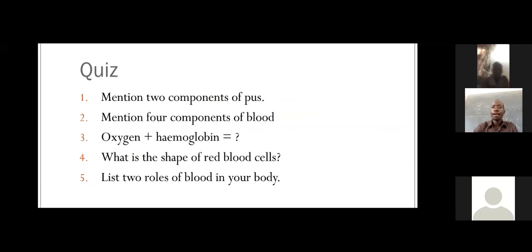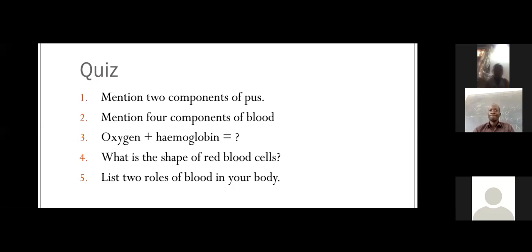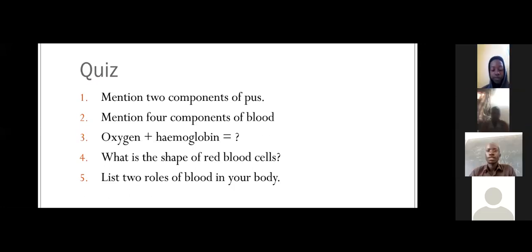For question four — what is the shape of red blood cells? — a student answered: they are disc-shaped. Disc-shaped, yes, good. For question five, a student answered that blood functions to transport nutrients and to transport hormones. Transport hormones and transporting nutrients — thanks a lot. That was the quiz.